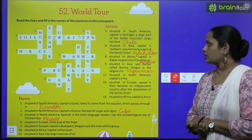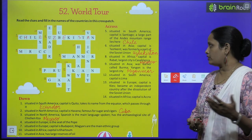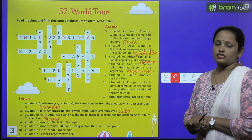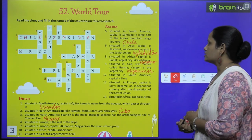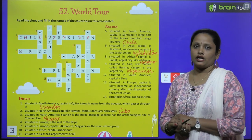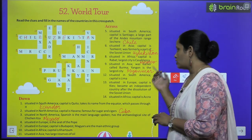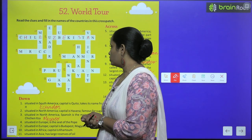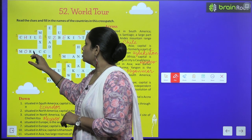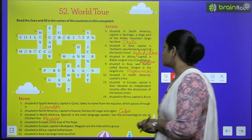Next, number eight, situated in Africa. Yeh bhi Africa mein hai. Its capital is Rabat — ishka capital Rabat hai. The largest city is Casablanca — yeh sabse bada city Casablanca mein hai. And its name is Morocco.